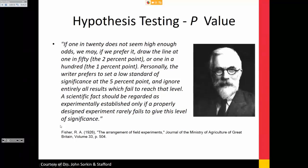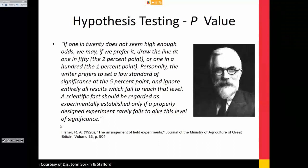Going back to the p-value — it's very arbitrary. Ronald Fisher came up with the 0.05 cutoff in the 1920s, essentially writing it in a paper once, and we've run with it for almost 100 years. We're starting to realize this arbitrary cutoff is doing more harm than good. People go p-value hunting, finding significant values that don't necessarily reflect true effects or good quality research.